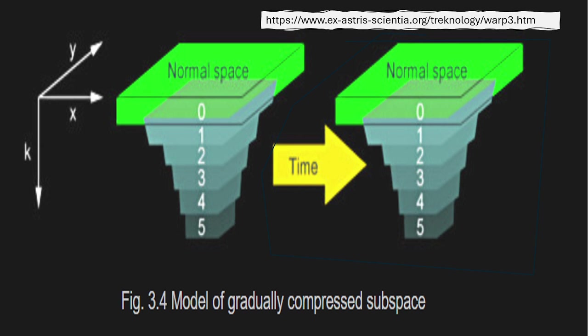Normal space lies on top of a more exotic subspace that gets more and more dense as we go deeper. There are also thresholds of energy required to go across various layers. These energies, once overcome, will allow the speeds available at that level, and the speeds get higher and higher as you go deeper and deeper into this funnel.